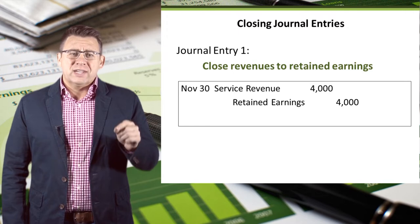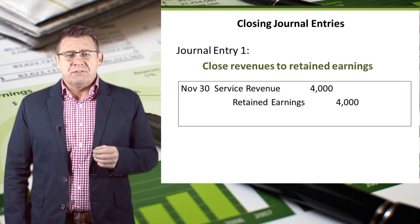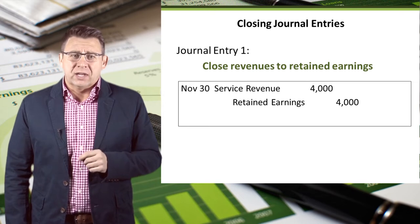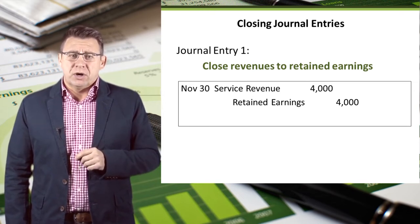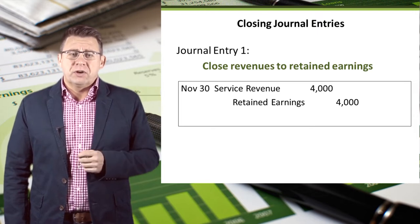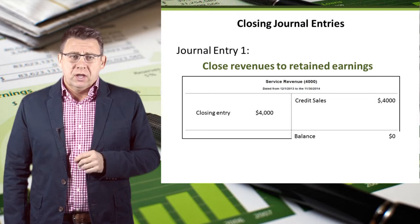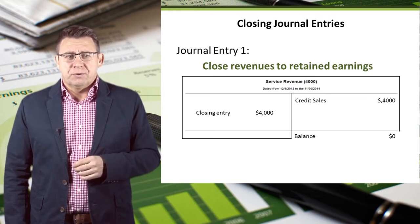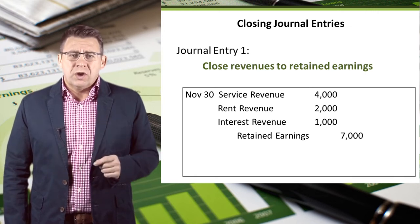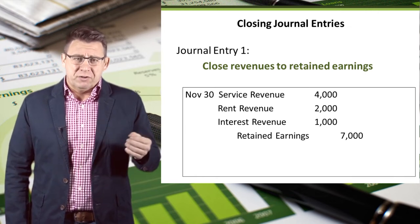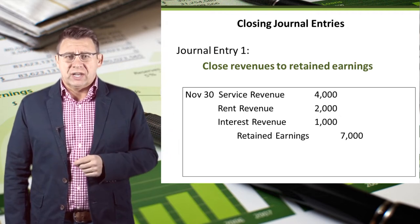The first journal entry is to close revenues to retained earnings. Since revenues have a $4,000 credit balance, we will debit service revenue to make the balance zero. Retained earnings will then be credited. After posting this closing entry, the balance in the service revenue account is zero. Note that if we had more than one revenue account, like rent revenue and interest revenue, we would include them in the journal entry like this.